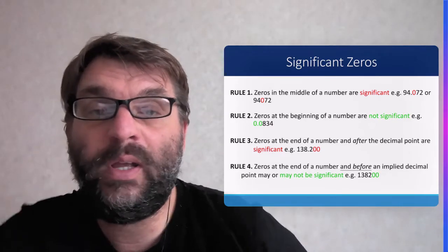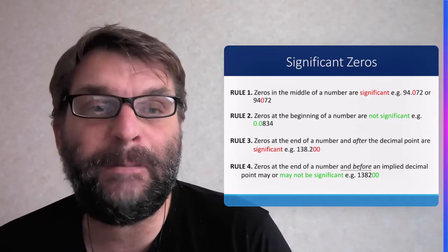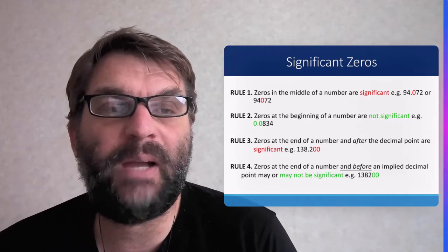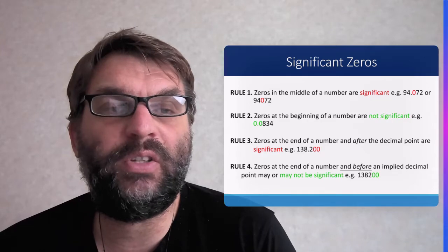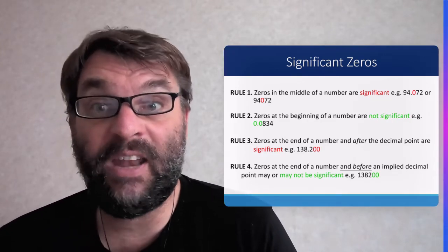The first rule is that zeros in the middle of a number are indeed very significant. So there's a couple of examples there, 95.072 and 94072, they all count towards being significant.